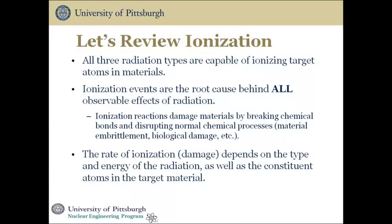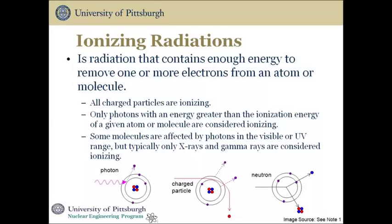The rate of ionization damage depends upon the type of radiation, the energy of the radiation, and the constituent atoms in the target material. Ionizing radiation is radiation that contains enough energy to remove one or more electrons from an atom or molecule. All charged particles are ionizing, while only photons with an energy greater than the ionization energy of a given atom or molecule are considered ionizing. Gamma rays and x-rays are considered to be ionizing. The illustration should help you recall the interactions of photons, charged particles, and neutrons.